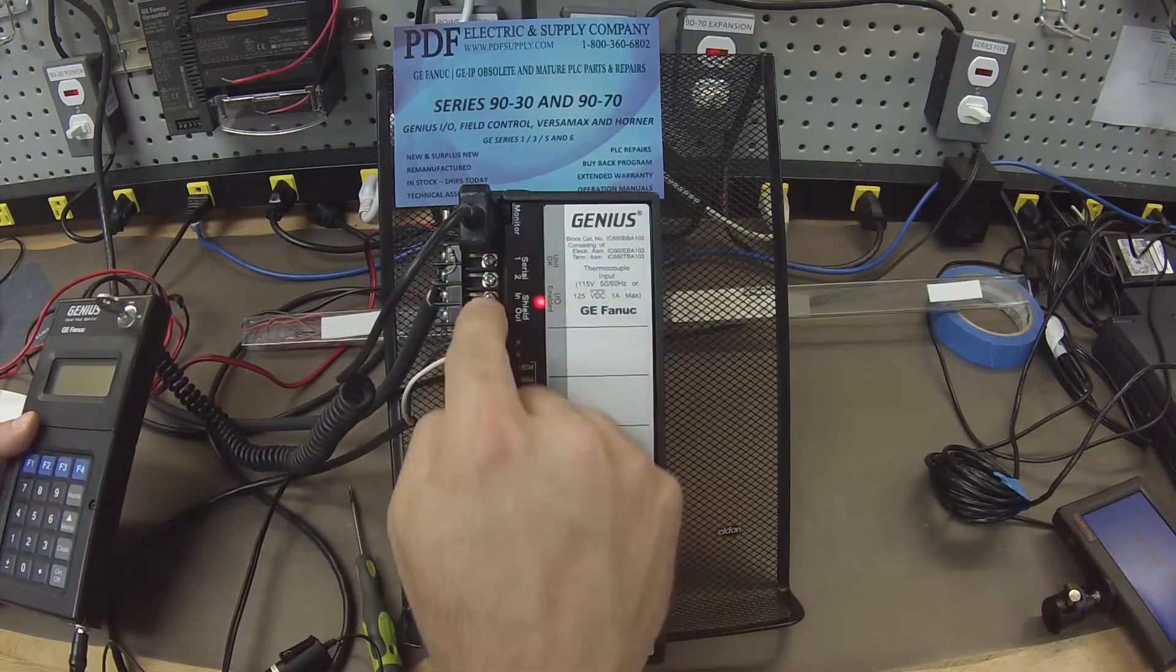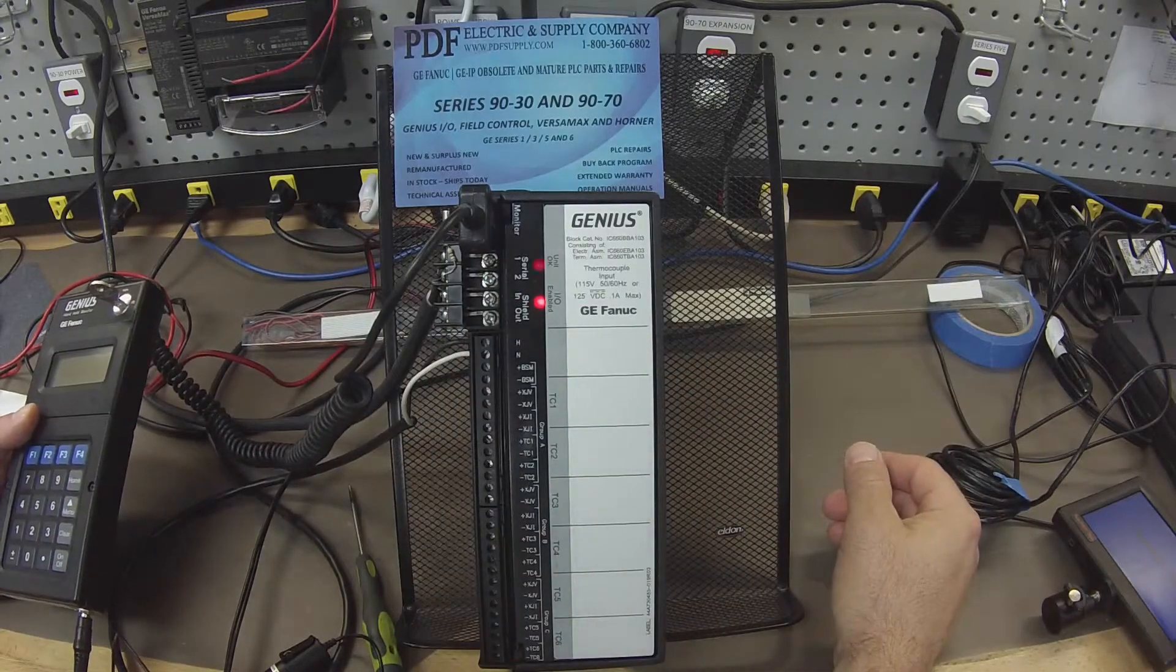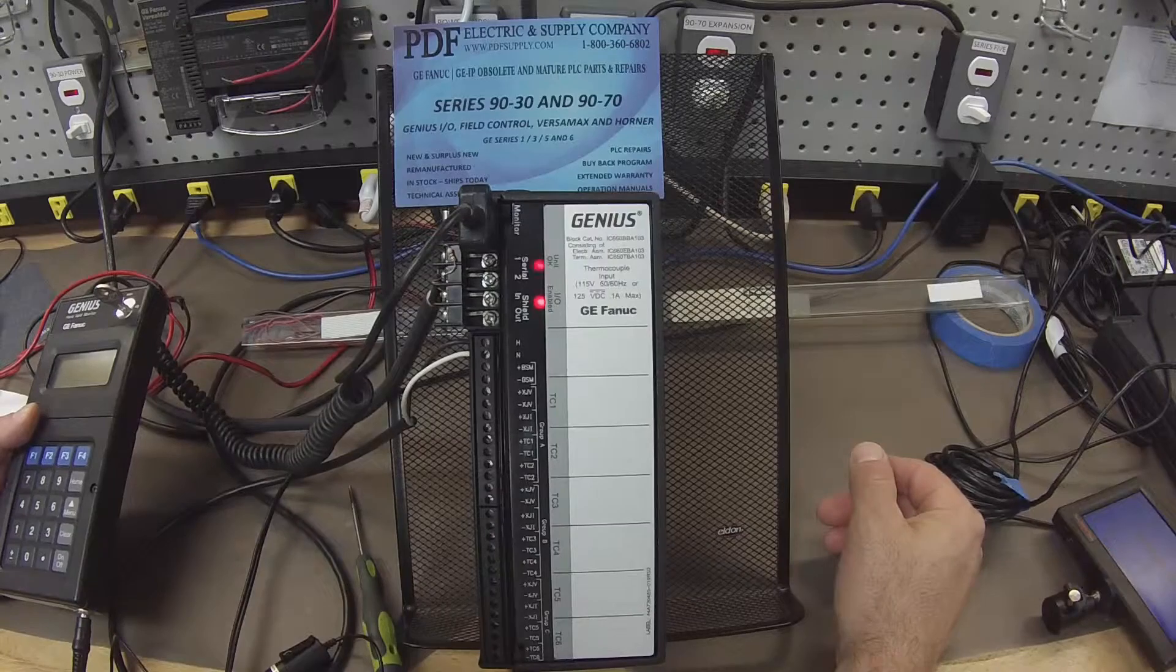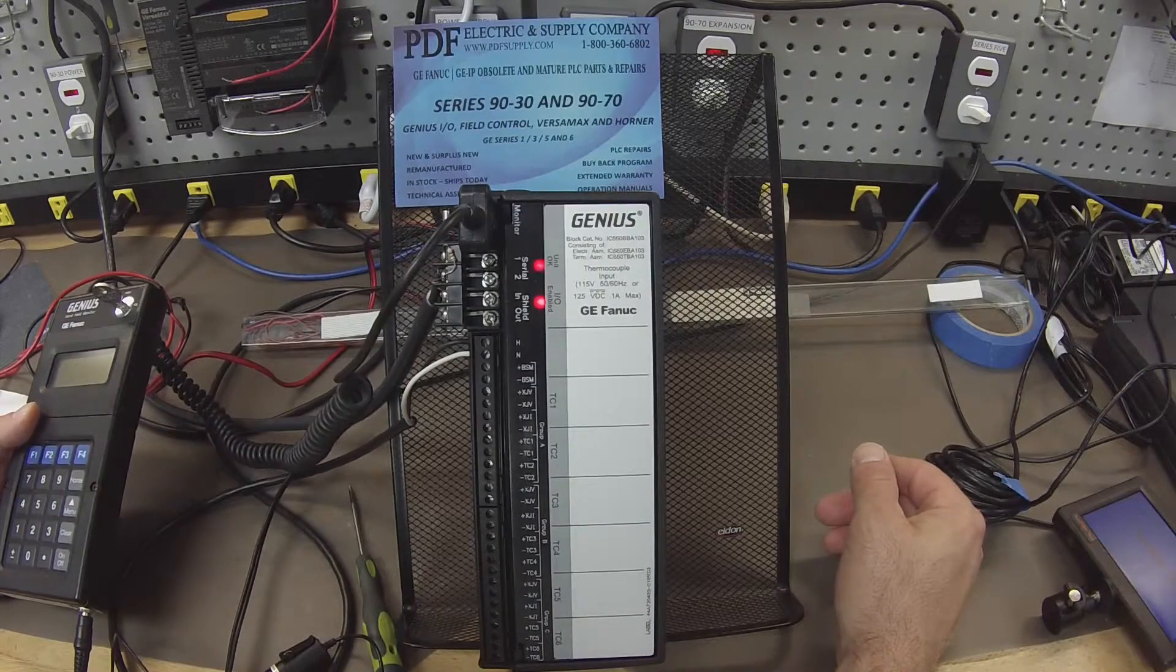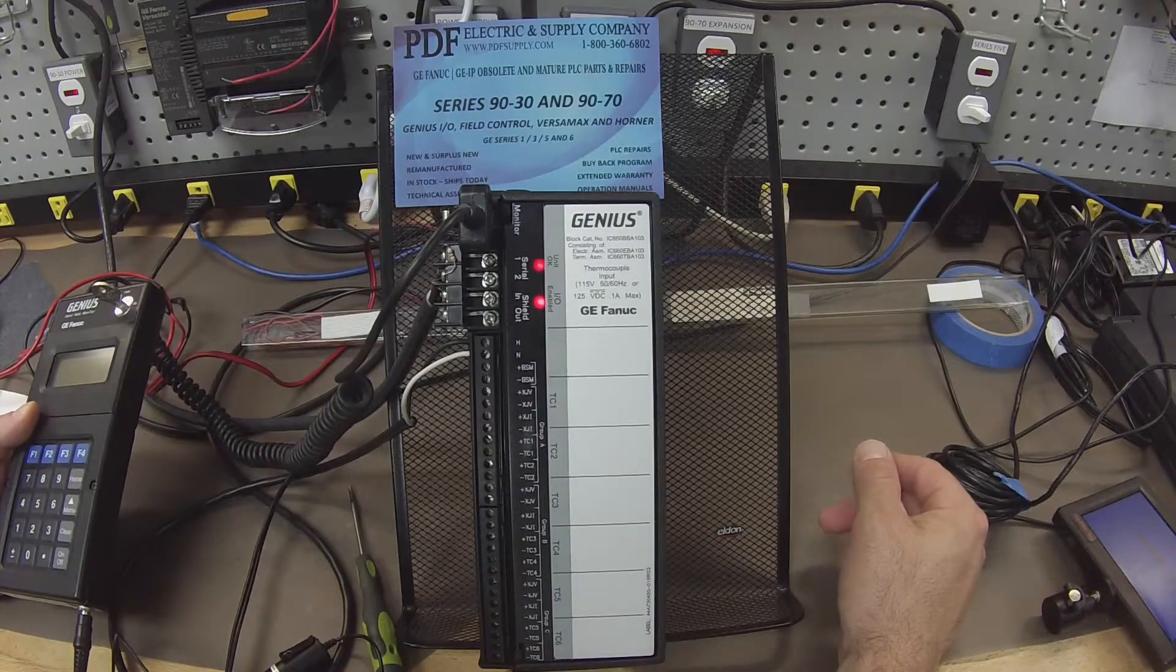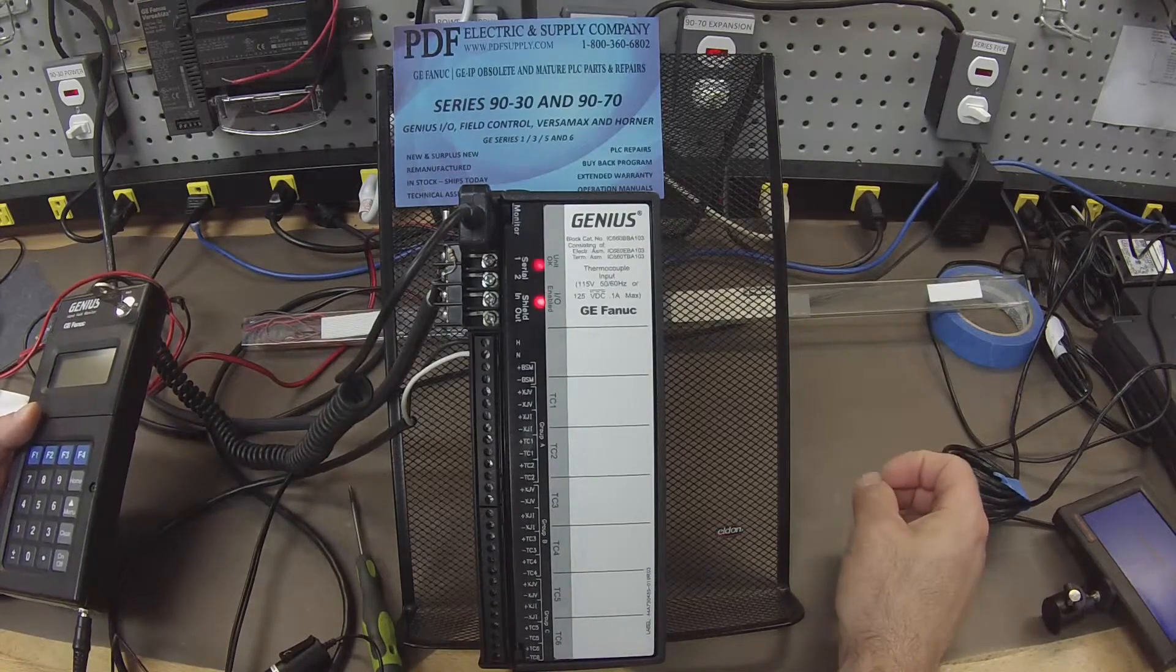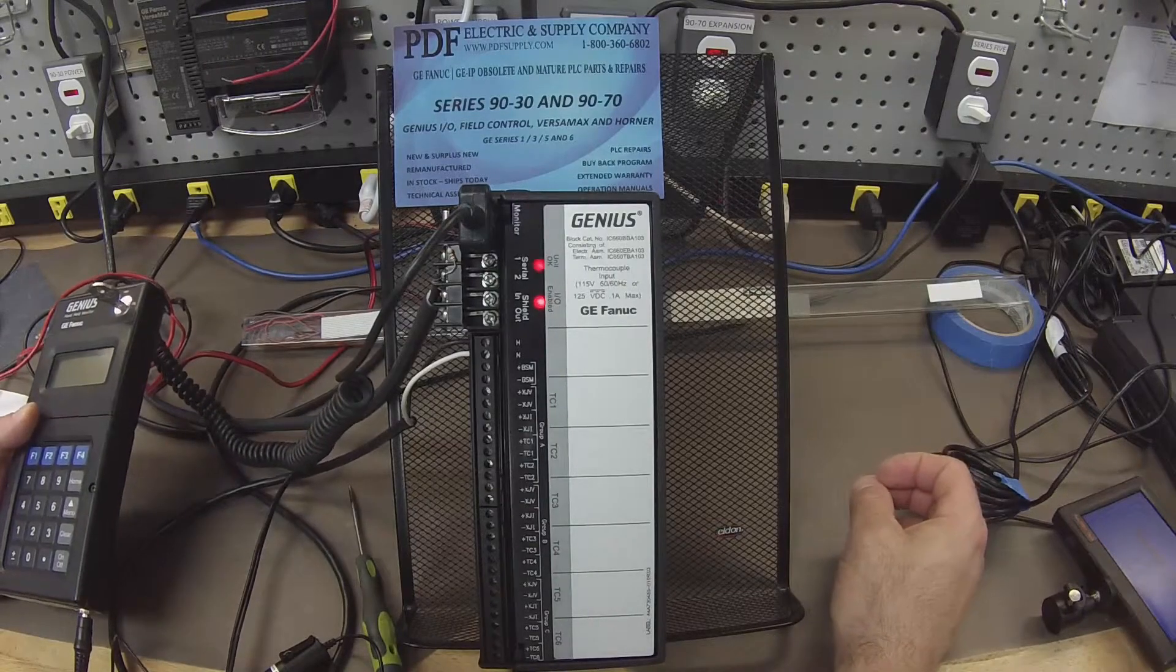Second, the serial port, which is connected to peripheral devices. I have it connected to a Genius bus controller, part number IC-693BEM331, and that bus controller is in an IC-693CHS397 five-slot rack. It's being powered by an IC-693PWR330 high-capacity power supply, and we're using an IC-693CPU374 processor.